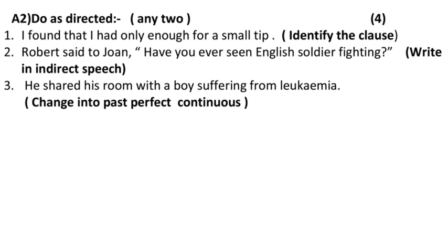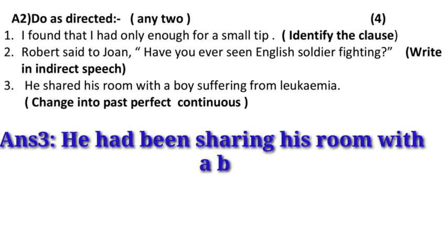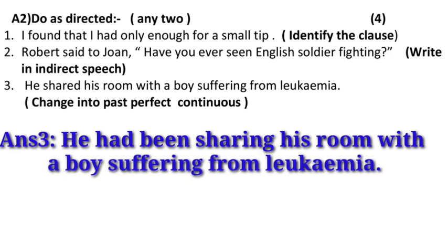Now let us see the third one: 'He shared his room with a boy suffering from leukemia.' Change this into past perfect continuous tense. When changing to this form, you have to use 'had been' plus the '-ing' form of the verb. So the answer is: 'He had been sharing his room with a boy suffering from leukemia.'